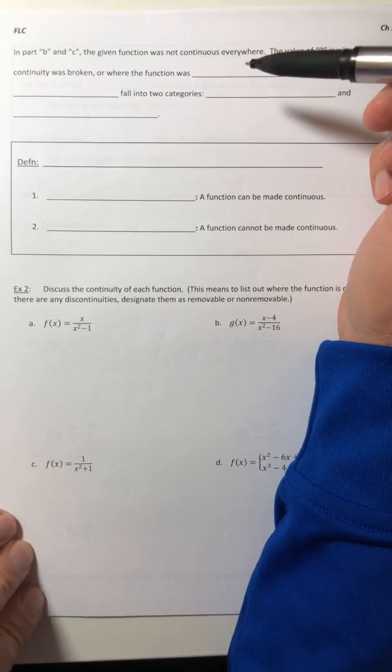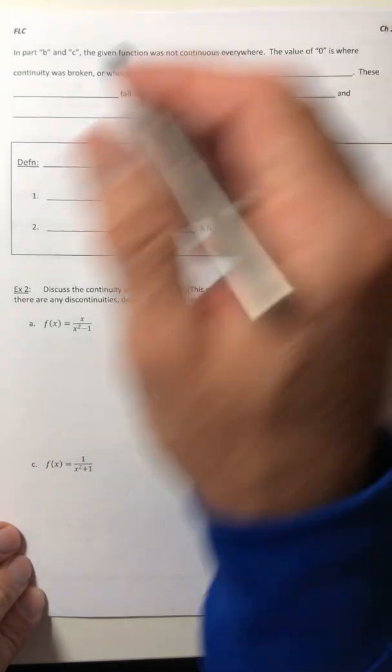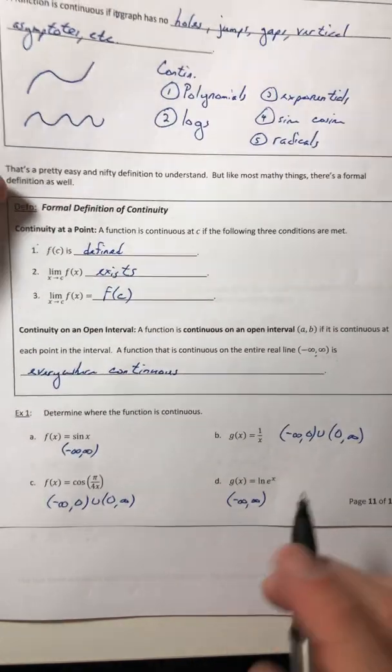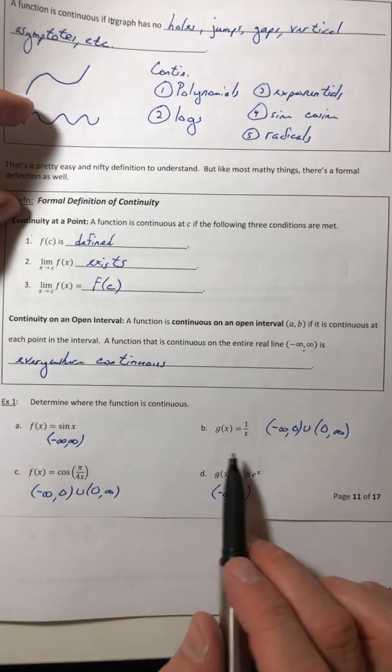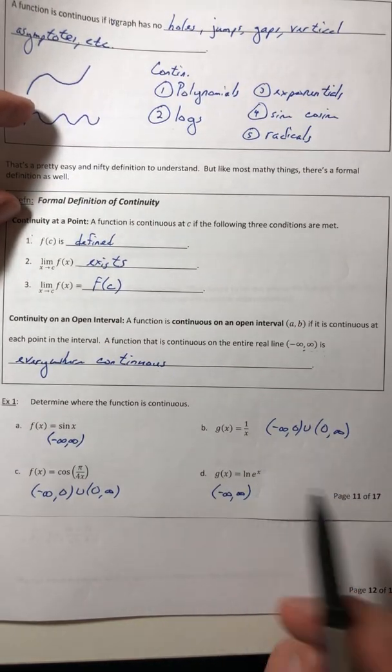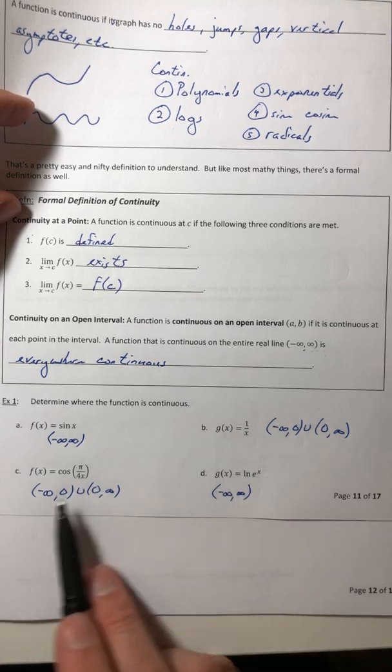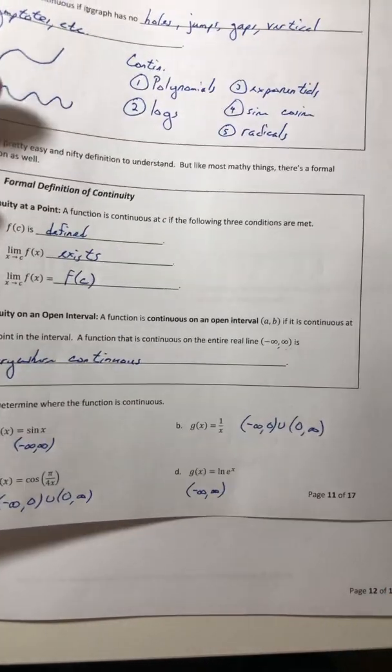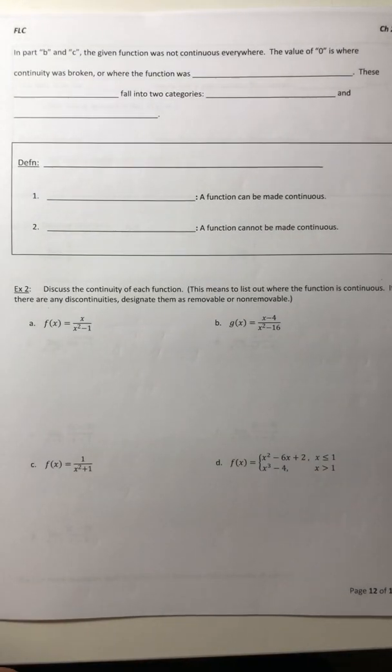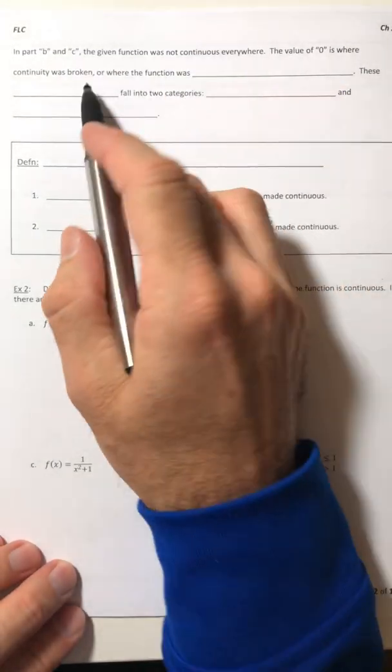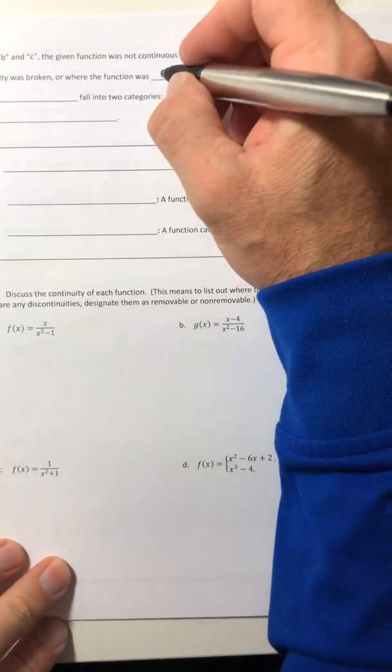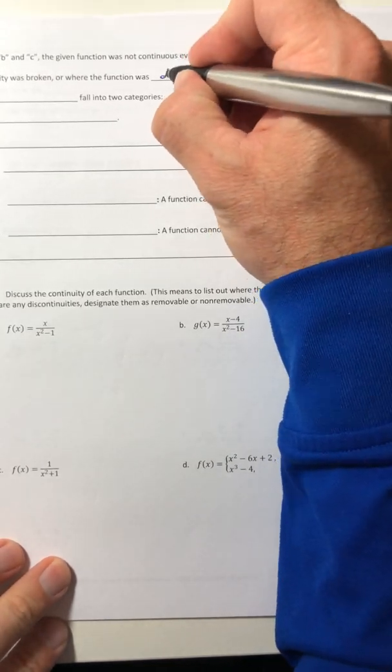Let's take a look at the reverse of continuity a little bit. In part B and C from the previous example, the function was not continuous everywhere. There was a certain x value in both of them that we weren't able to use. It broke the continuity up.